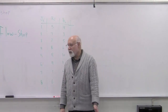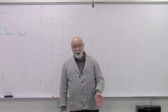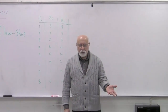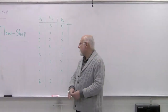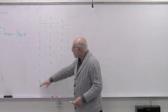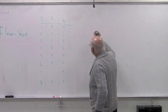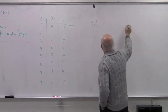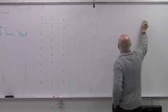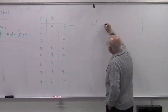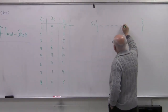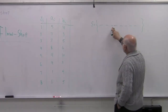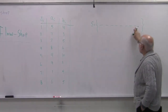The way that Johnson's algorithm works is very, very simple — only two steps. First, we have 8 jobs, so the sequence that we are going to be using has 8 slots that need to be filled: 1, 2, 3, 4, 5, 6, 7, 8.